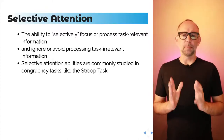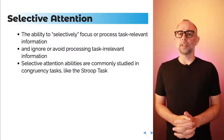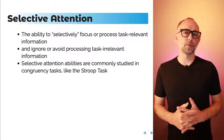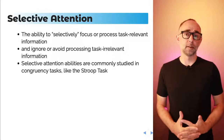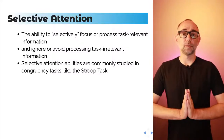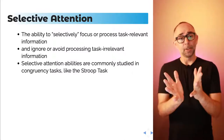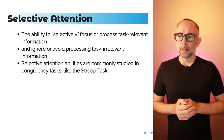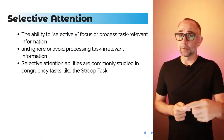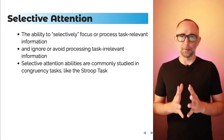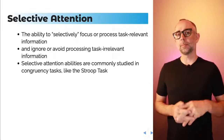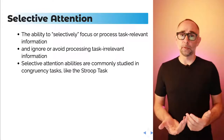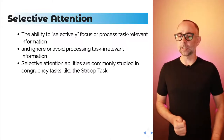These abilities are commonly studied in concurrency tasks like the Stroop task. These tasks generally show people some information, and there's going to be target information that you're supposed to focus on — this is the task-relevant information — and there's going to be some distracting information that you're not supposed to focus on. Let's take a look.